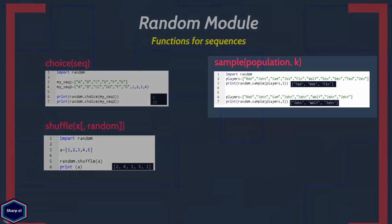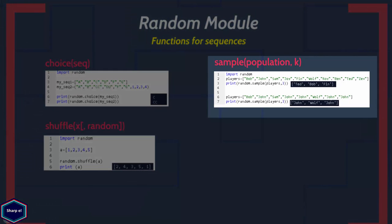The sample() function takes a population, which can be a sequence or a set, and returns a sequence of length k from the population. So why do we need such a function?